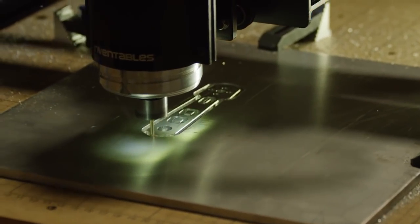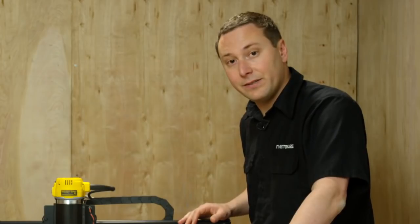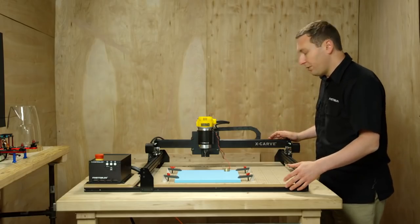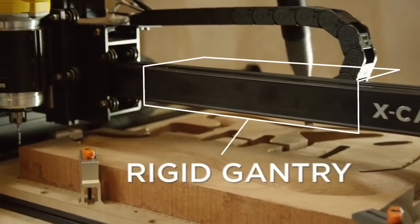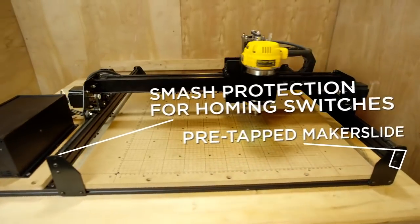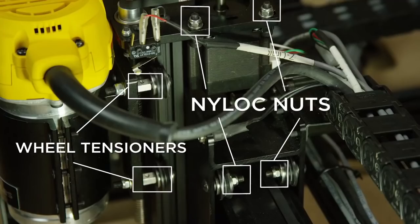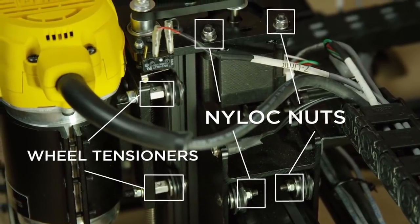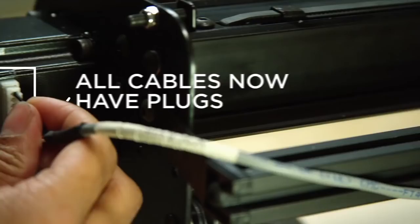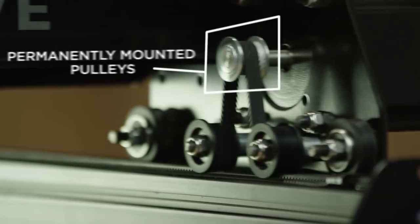We heard from some of you that sometimes vibrations were causing inconsistencies. So we looked around the machine and made improvements in three key areas: hardware, wiring, and the pulleys.